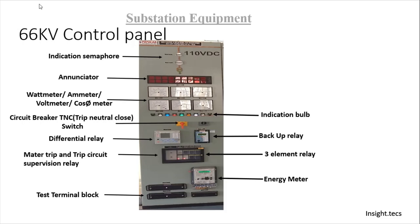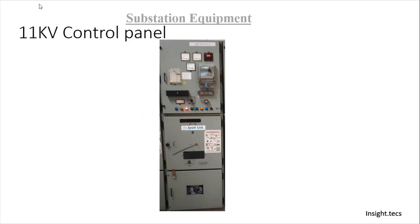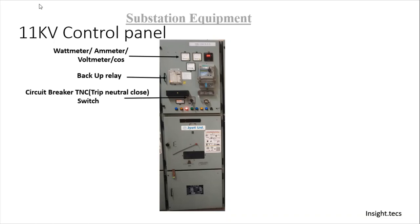How much energy is incoming and how much energy is outgoing. This is an example of an 11 kV control panel. Here also, we have a wattmeter, ammeter, voltmeter, and power factor meters. There are main backup relays. Again, there is a circuit breaker TNC switch, voltage meter, and energy meter — a very important factor in a panel. Then, there are test terminal blocks connected with the energy meters.